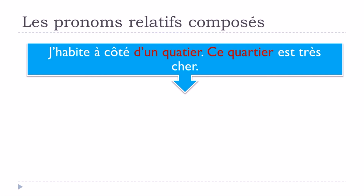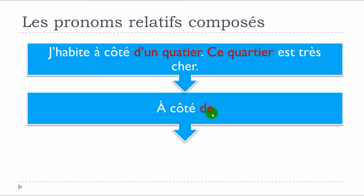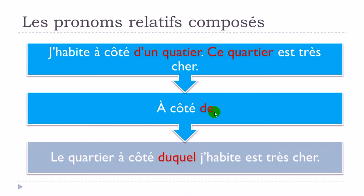Now the same situation with masculine singular: j'habite à côté d'un quartier, and ce quartier est très cher. We want one sentence, no repetition of quartier. We notice à côté de, so we get the preposition de. Since quartier is masculine singular, de plus lequel becomes duquel. So: le quartier, then à côté duquel, then j'habite, then est très cher. Full sentence: le quartier à côté duquel j'habite est très cher.